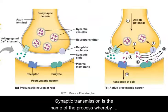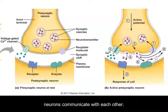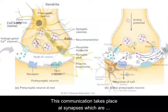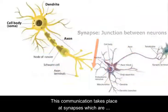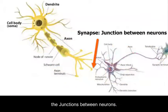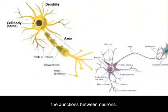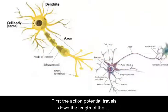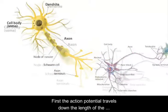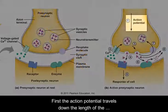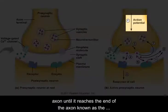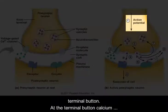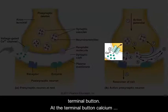Synaptic transmission is the name of the process whereby neurons communicate with each other. This communication takes place at synapses, which are the junctions between neurons. First, the action potential travels down the length of the axon until it reaches the end of the axon, known as the terminal button.